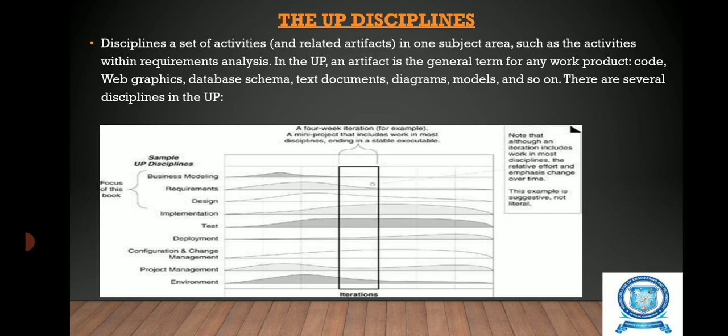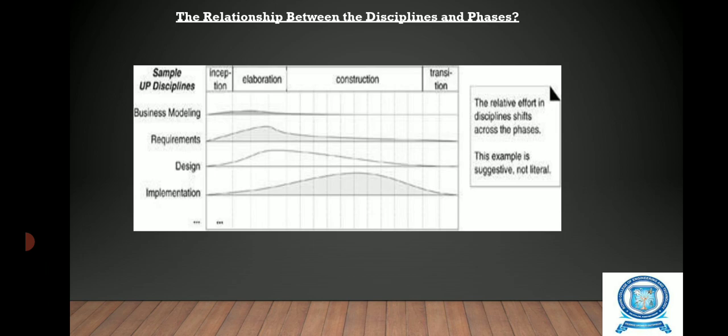UP disciplines. A discipline is a set of activities and related artifacts in one subject area, such as the activities within requirement analysis. In the Unified Process, an artifact is the general term for any work product — code, web graphics, database schema, text documents, diagrams, models and so on. There are several disciplines in the Unified Process, depicted in a diagram showing the relationship between the disciplines and phases.